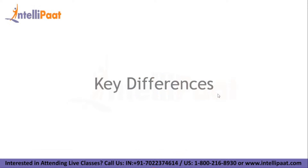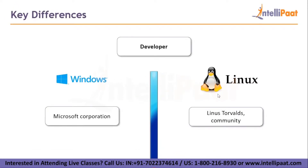Now let us take a look at key differences between Windows and Linux. The first difference is the developer. The developer for Windows is Microsoft Corporation, a huge enterprise with hundreds of engineers. The developer for Linux is Linus Torvalds himself, along with a community of passionate developers. Windows is written in C++ and assembly language, while Linux is written in C and assembly language.